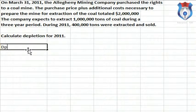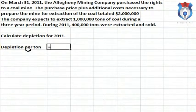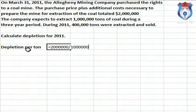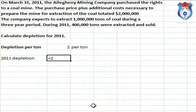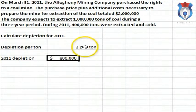Depletion per ton equals total cost of $2 million divided by the estimated 1 million tons to be extracted, which gives $2 per ton. Therefore, 2011 depletion equals $2 per ton times 400,000 tons extracted, resulting in $800,000 of depletion for 2011. That is all there is to it.